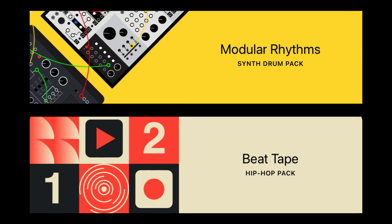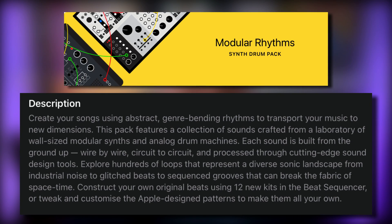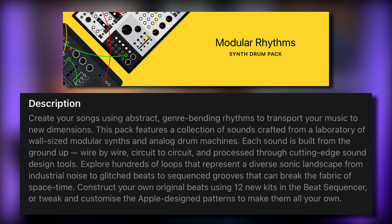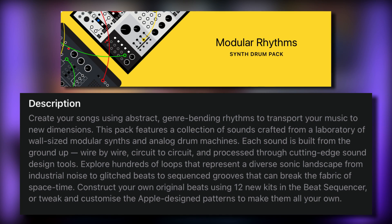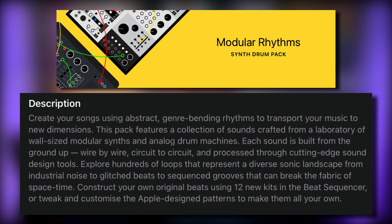Alongside the update, Apple also added content from two previously iOS-only sound packs: Modular Rhythms and Beat Tape. Modular Rhythms adds 12 new electronic drum kits and over 200 Apple Loops. The kits and loops were all created using modular synths and analog drum machines.